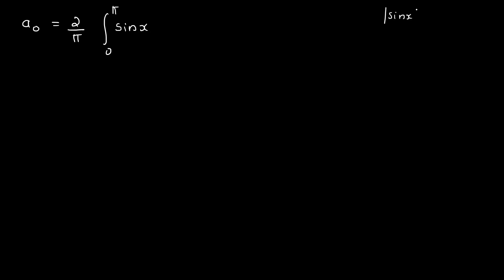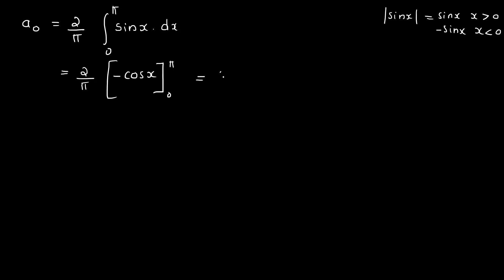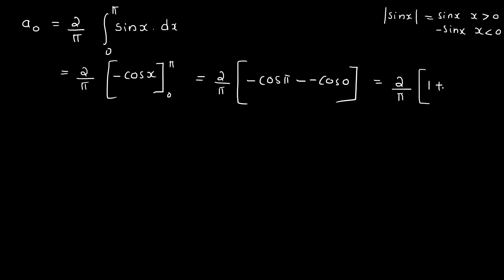For x greater than 0 on (0, π), sin x is positive. So a₀ = 2/π integral from 0 to π of sin x dx = 2/π [-cos x] from 0 to π = 2/π [(-cos π) - (-cos 0)] = 2/π [1 + 1] = 4/π.